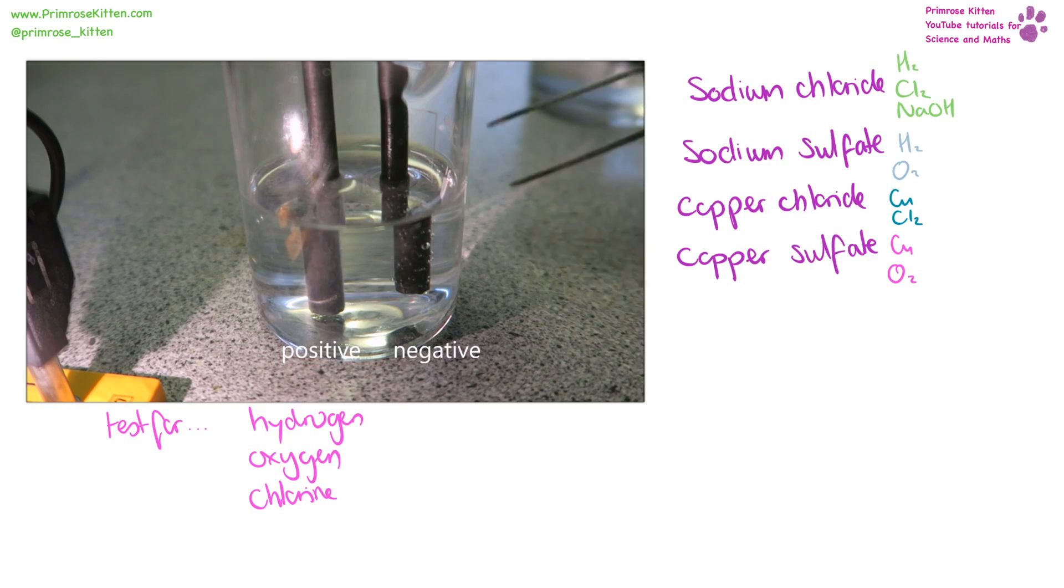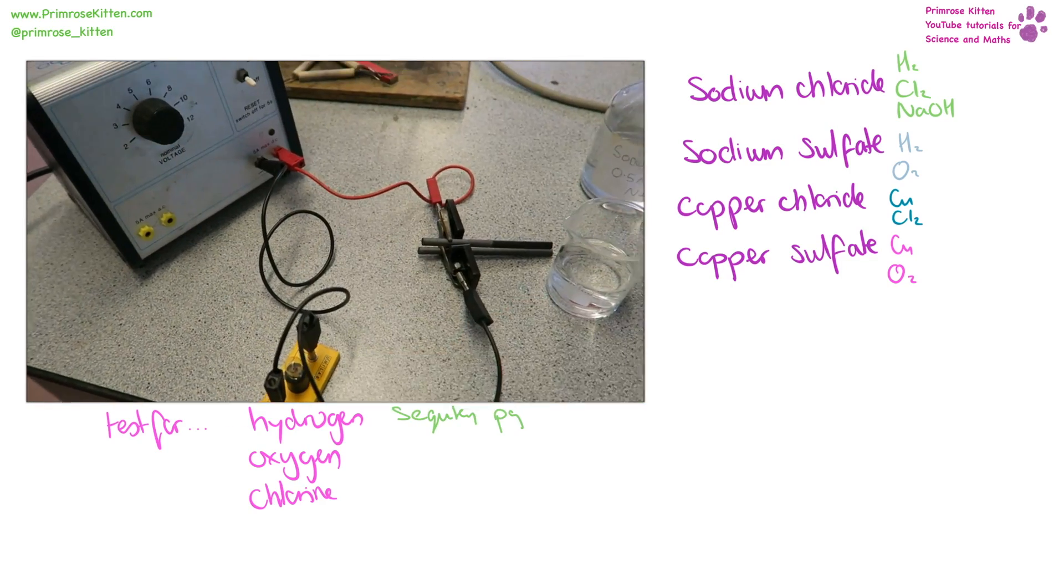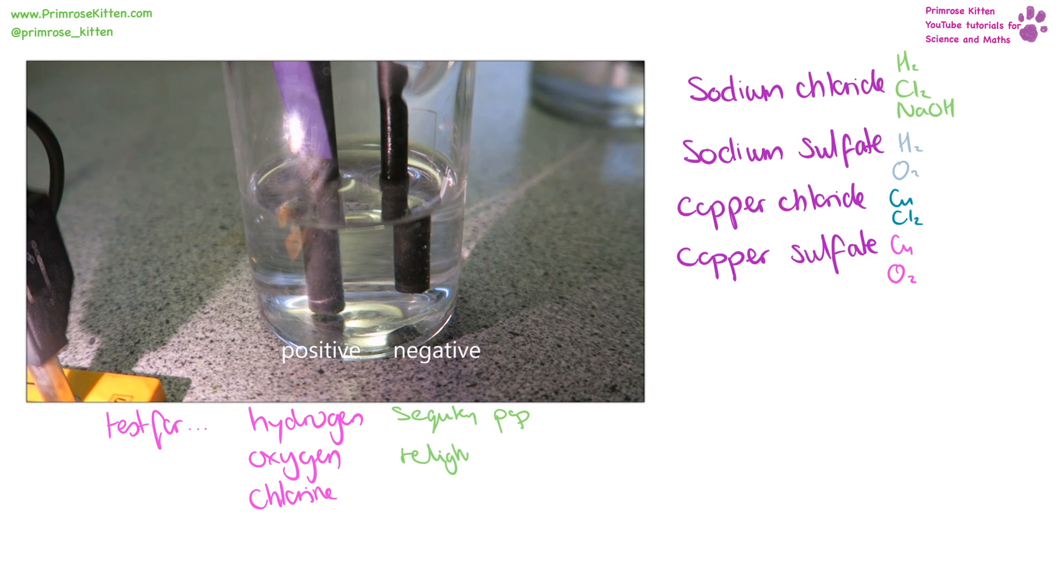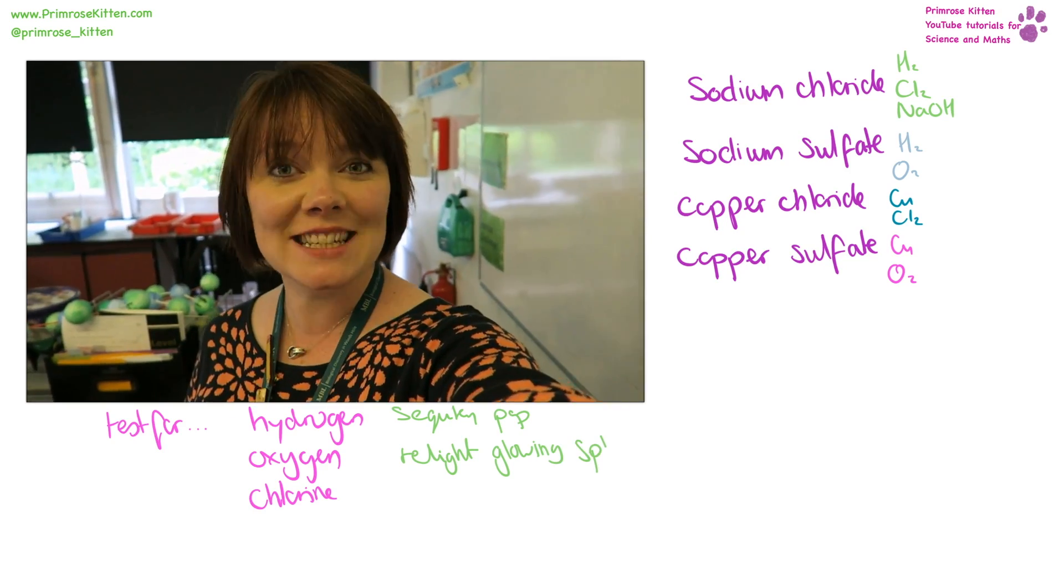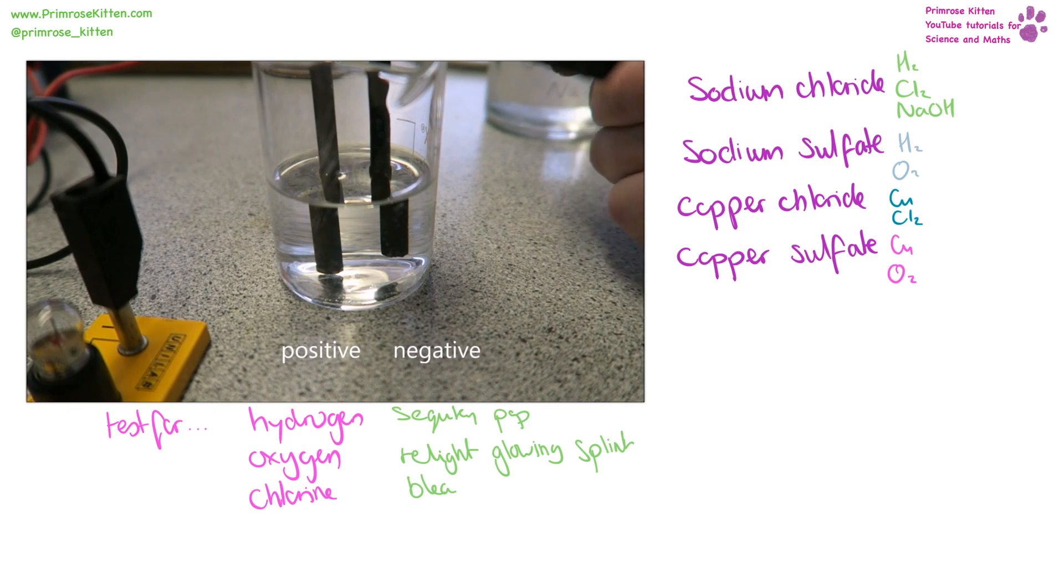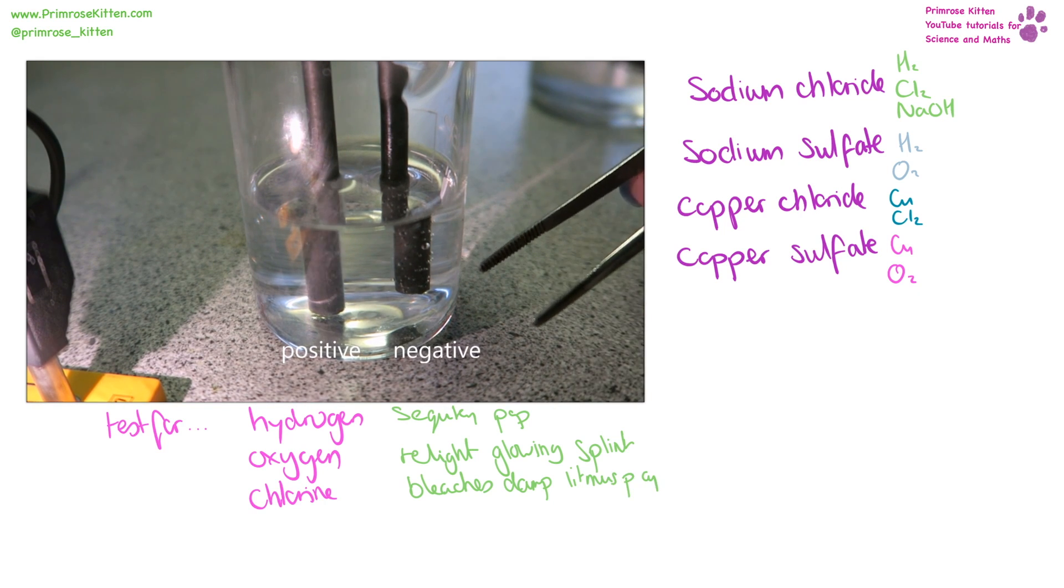The test for hydrogen gas is a squeaky pop. The test for oxygen gas is relighting a glowing splint. And the test for chlorine gas is that it bleaches damp litmus paper.